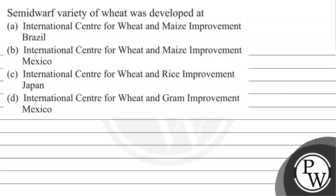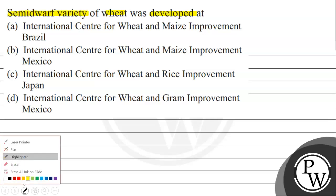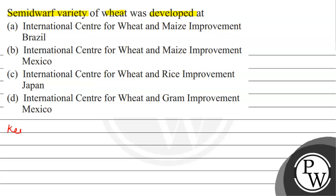Hello, let's read the question. The question says: semi-dwarf variety of wheat was developed at (A) International Center for Wheat and Maize Improvement, Brazil; (B) International Center for Wheat and Maize Improvement, Mexico; (C) International Center for Wheat and Maize Improvement, Japan; (D) International Center for Wheat and Gram Improvement, Mexico. We have four options and we need to choose the correct answer.